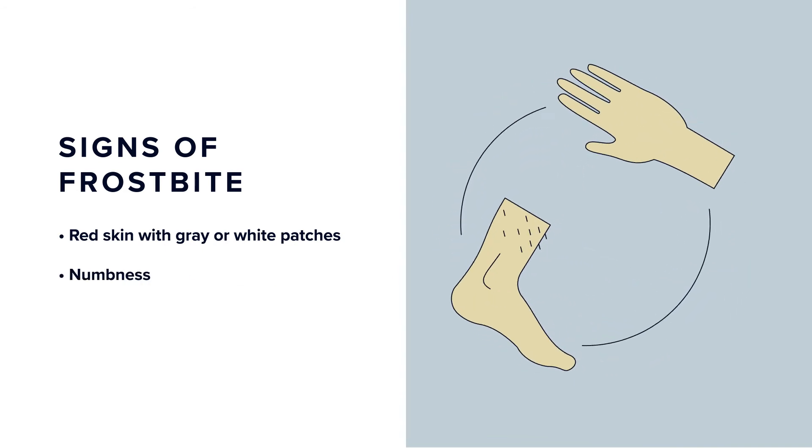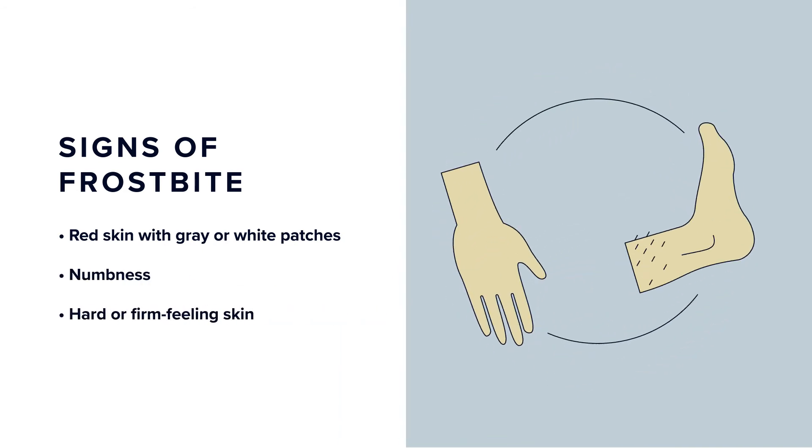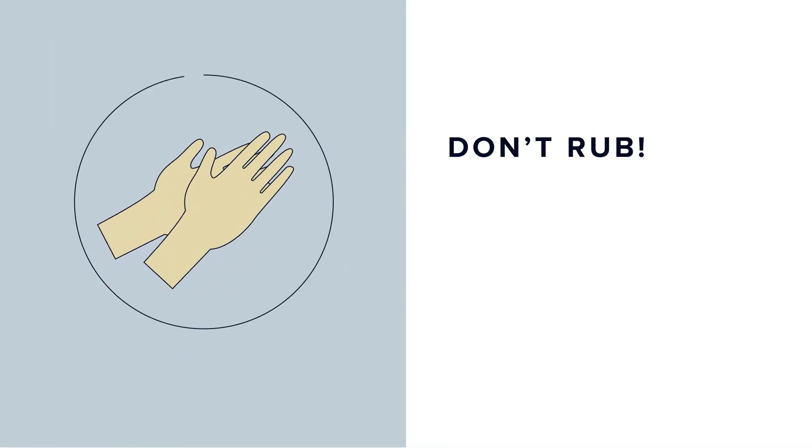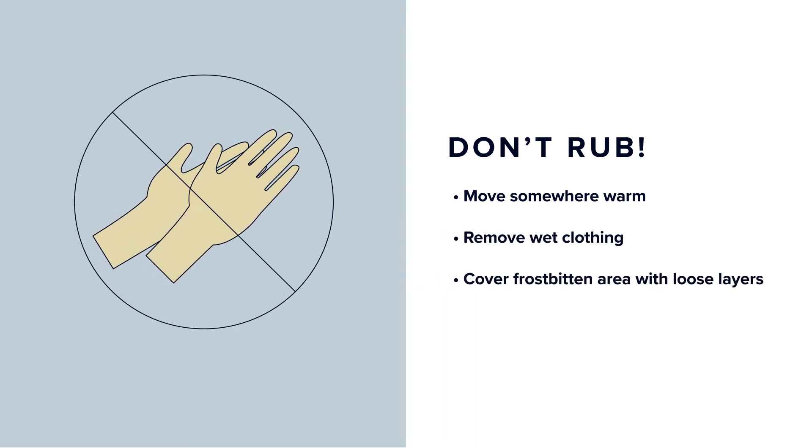Frostbite typically occurs in the extremities and can be identified by red skin with gray or white patches, numbness, skin that feels firm or hard, and possibly blistering. If you suspect frostbite, don't rub the affected area. Move somewhere warm, remove wet clothing, and cover the affected body part loosely with warm layers. Seek medical attention as soon as possible.